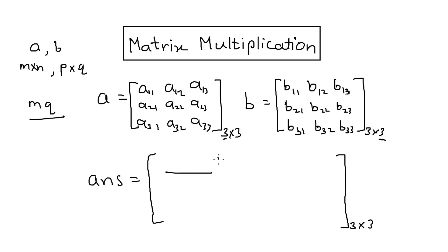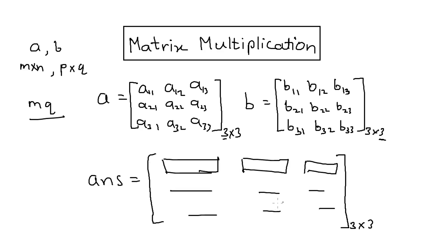The answer will have three rows and three columns. For the element in the first row and first column, we will multiply the first row of the first matrix with the first column of the second matrix. Here, this gives the row of the first matrix and this gives the column of the second matrix — remember that. For first row and second column, we use the first row of the first matrix and the second column of the second matrix.